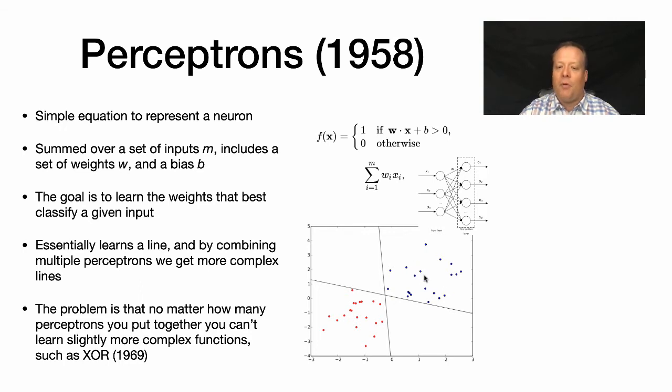And if the weight times the input plus some bias term was greater than zero, then it would output an answer one. Otherwise it would output an answer zero. The solution would be to look through the weights and assign the weights in the correct way, such that for the same input, you got the right answer.